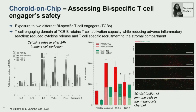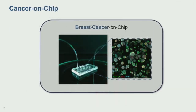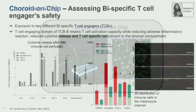We then used the same system to look at bispecific T cell engagers, or TCBs. We tested two different TCBs — TCB A and TCB B — and looked at their recruitment of T cells into the choroidal compartment due to TCB treatment, which is something you don't want: you want the T cells to go to the tumor, not the choroid. We could see a strong difference between the two TCBs in terms of cytokine release and T cell-specific recruitment, as well as in the type of cells recruited.